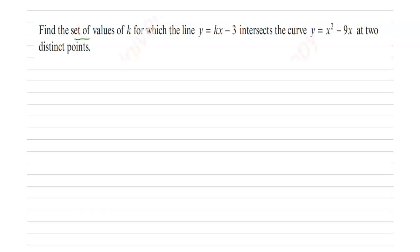Find the set of values of K for which the line y equals kx minus 3 intersects the curve y equals x squared minus 9x at two distinct points.